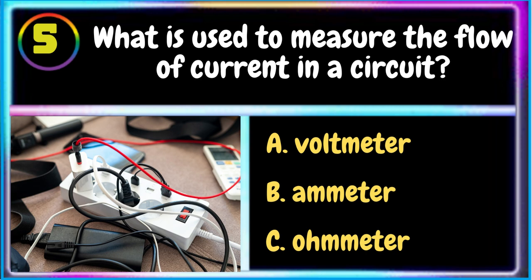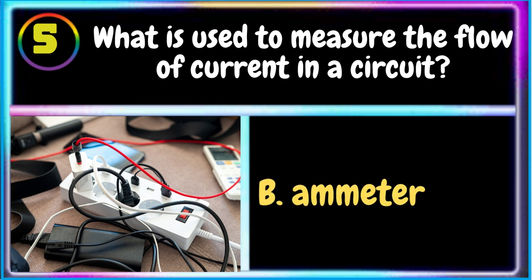5. What is used to measure the flow of current in a circuit? A. Voltmeter B. Ammeter. The correct answer is B. Ammeter.